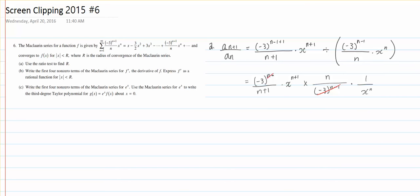so that becomes negative 3, that becomes 1, we're left with n negative 3x and n plus 1. So that becomes negative 3n over n plus 1 times x.